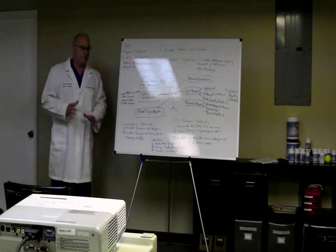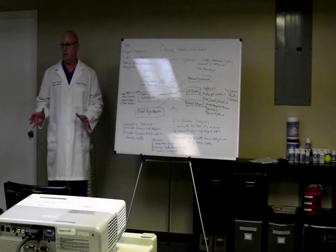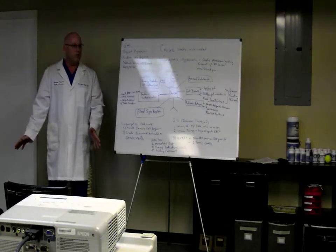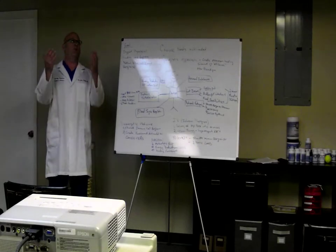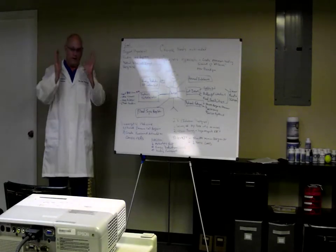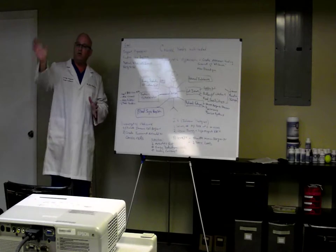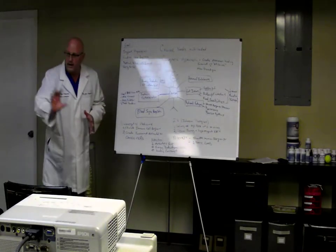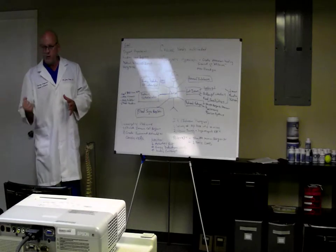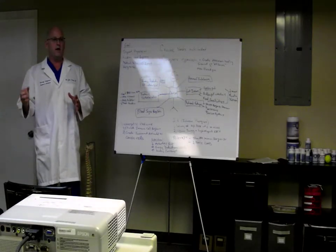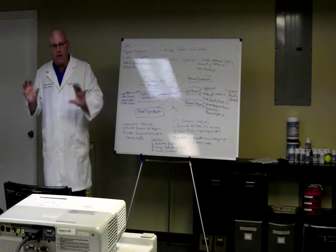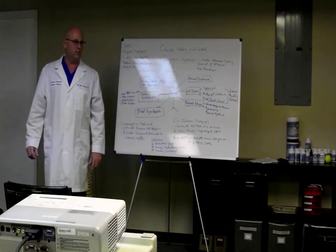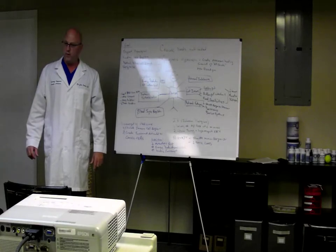So one test we do is an organic acid test. I love this test for two reasons. It's easy to do. It's a urinary test. And it comes back with this great 10 page report. It shows me all the processes to go through to make ATP, energy for your cell. And it shows me all the blockages you have in that pathway because of nutritional deficiencies.